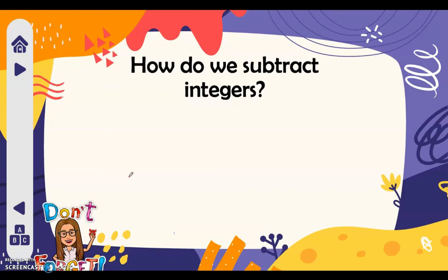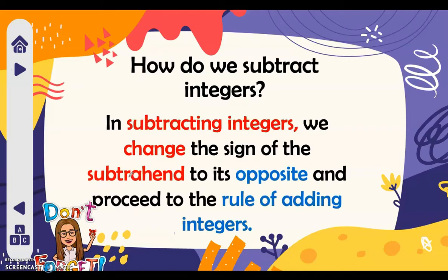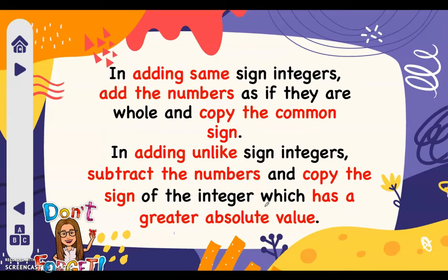Now we will subtract integers. In subtracting integers, we change the sign of the subtrahend to its opposite and proceed to the rule of adding integers. The rule in adding integers: if it has the same sign, add the numbers and copy the common sign; if it is unlike sign, subtract the numbers and copy the sign of the integer which has a greater absolute value.